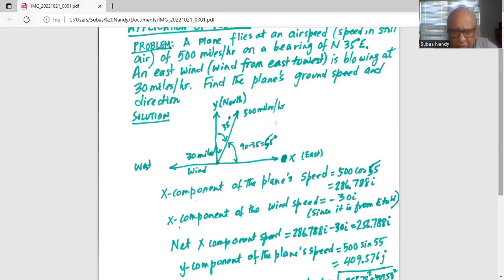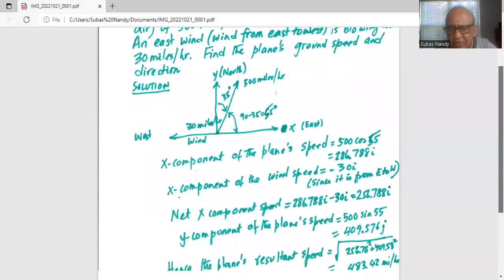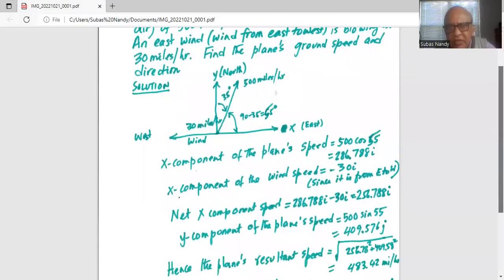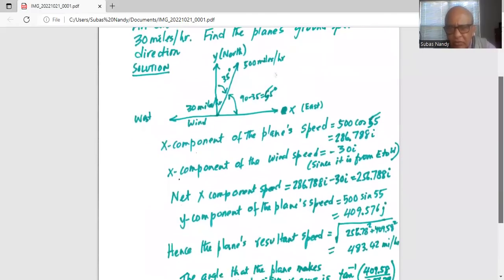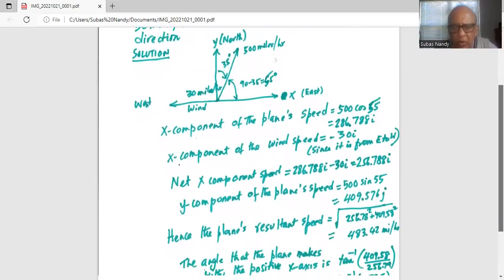And y component of the plane's speed is 500 sine 55, which is 409.576j. j is the unit vector in the y direction. Hence, the plane's resultant speed is square root of 256.78 squared plus 409.58 squared, which works out to 483.02 miles.